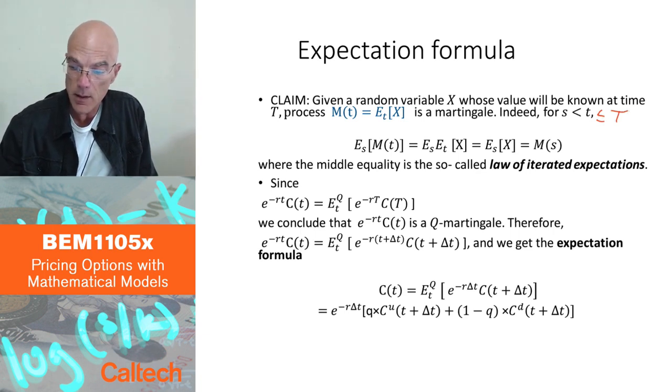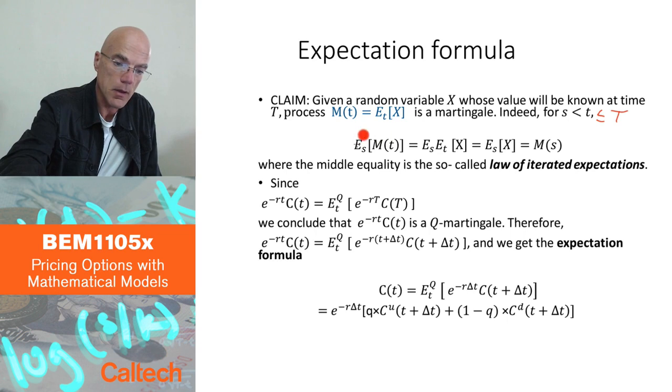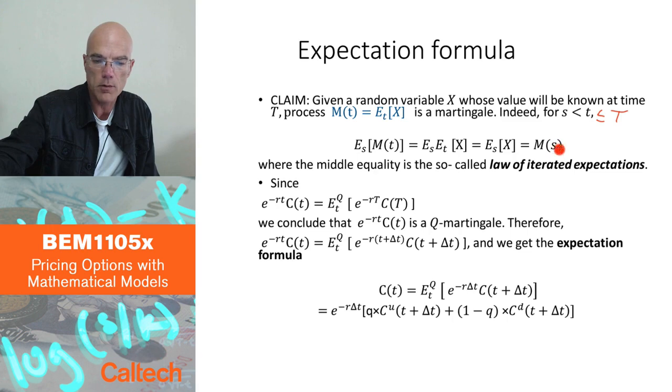So let's check that this is a martingale simply from the definition of a martingale. The definition of the martingale says that the expectation at any time s less than t, for every s and every t bigger than s, conditional expectation at s of m of t, so conditional expectation of the future relative to s has to be equal to today's value. Here I'm using s for today and t for the future. So this is what I want to prove, that the left-hand side is equal to this right-hand side.